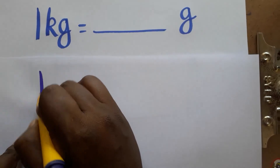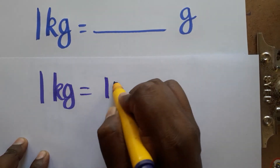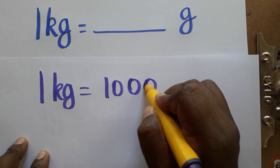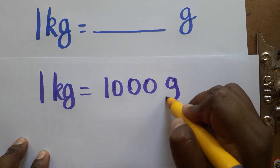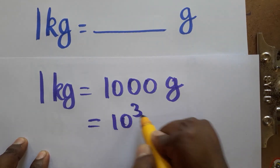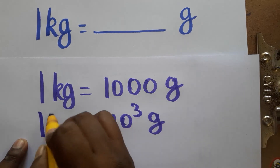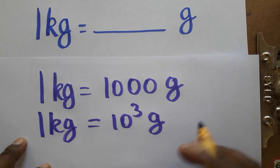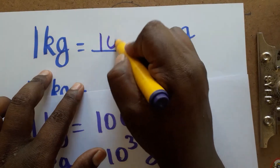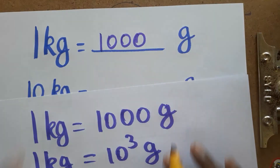First: 1 kg is equal to how many grams? 1 kg is equal to 1000 grams. We can also write 1000 as 10 power 3, so 1 kg is equal to 1000 or 10 power 3 grams.